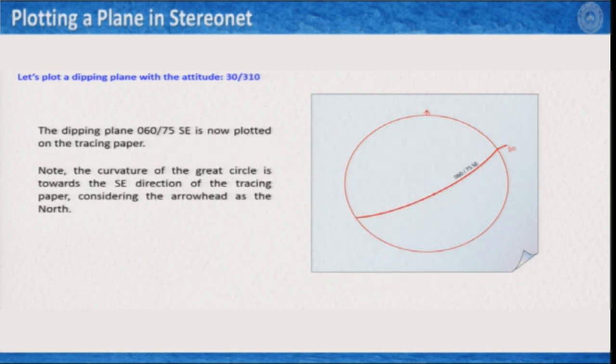Now rotate the stereonet back to align your north mark on the tracing paper with the north of the stereonet. Your 60-degree mark will also align, and the great circle drawn in the previous step will appear in its final position. This is the projection of the dipping plane 060/75SE. You write the data value on it, and you are done plotting a plane on the stereonet.